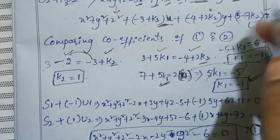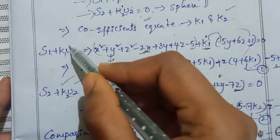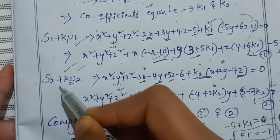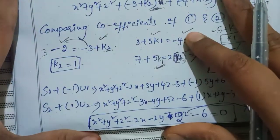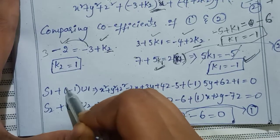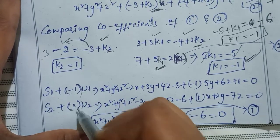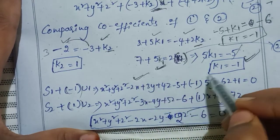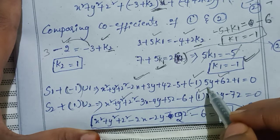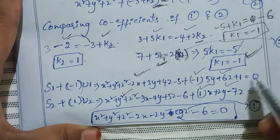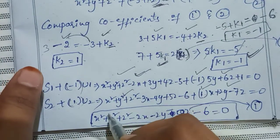Now we substitute K1 and K2 values into the equation. Substituting K1=-1 into S1+K1U1=0 or K2=1 into S2+K2U2=0 will give the same sphere equation.